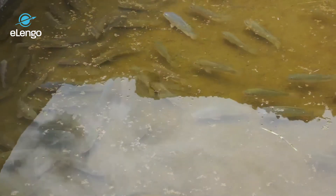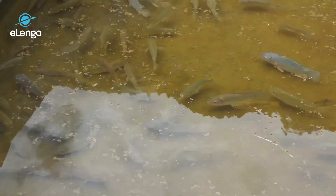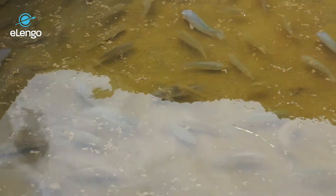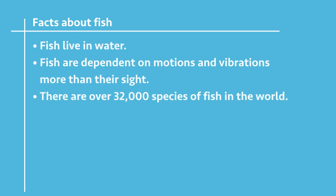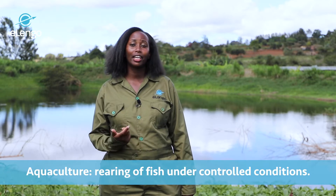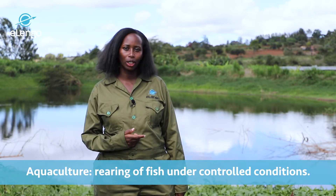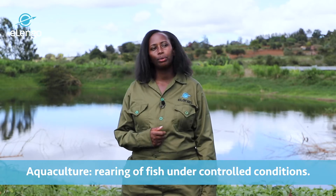Fact number one is that fish live in water. Fact number two is that fish depend on vibrations and motions as a signal, unlike humans and other animals which depend on sight. Fact number three is that we have over 32,000 species of fish.